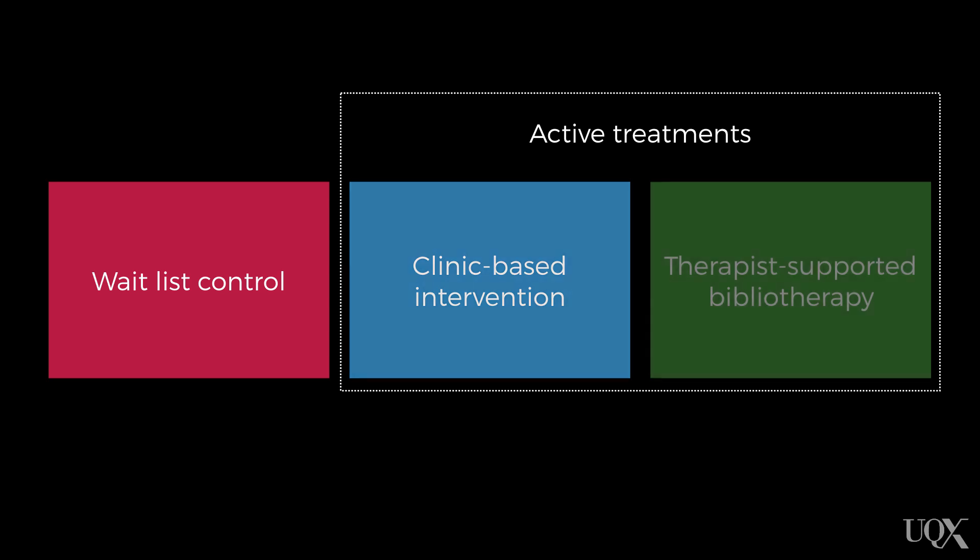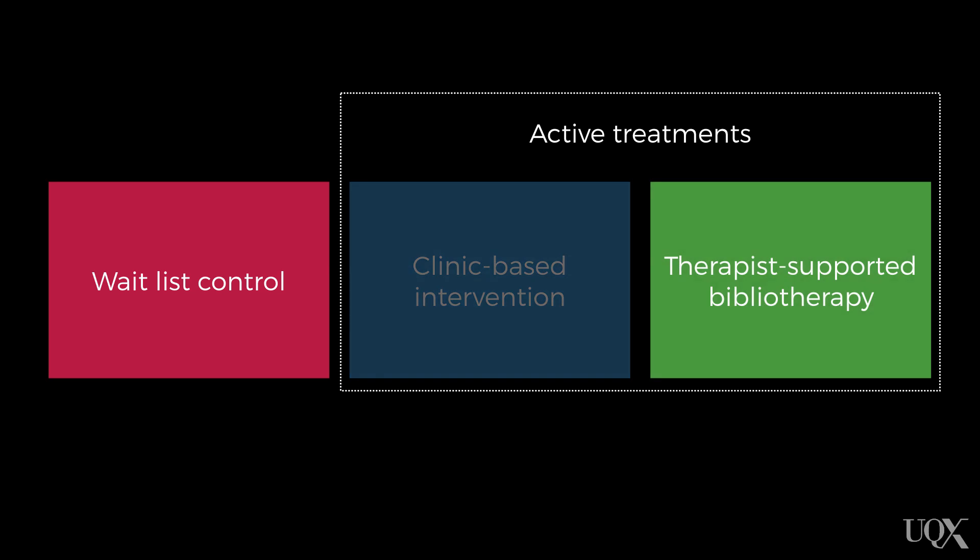The third condition was the therapist-supported bibliotherapy condition, where the parents received a brief training in the intervention and then worked through the entire 12-week program at home, with regular telephone support from their therapist. The intervention used in the two active treatment conditions was the same — the differences were about who and how it was delivered.